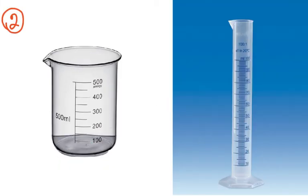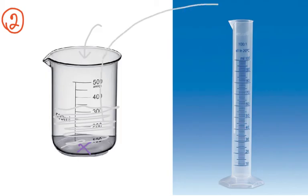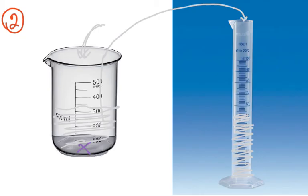Method 2: Add milk to the beaker until the X is no longer visible, then pour that milk into a measuring cylinder and read the volume from the measuring cylinder. This applies when the beaker has no calibration markings.